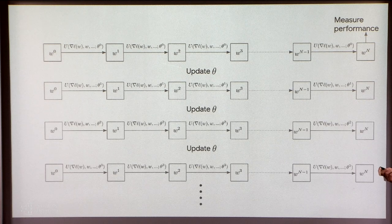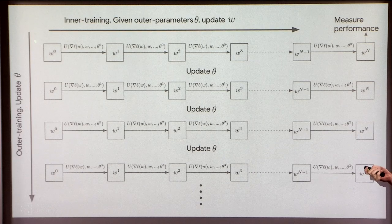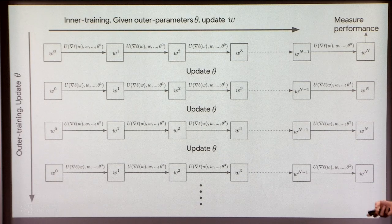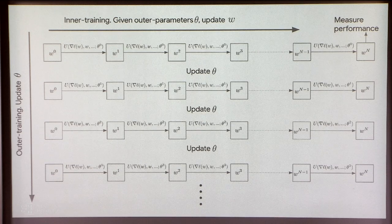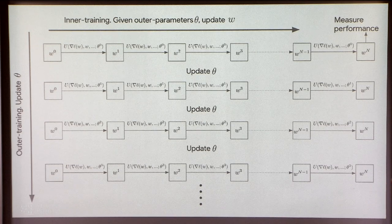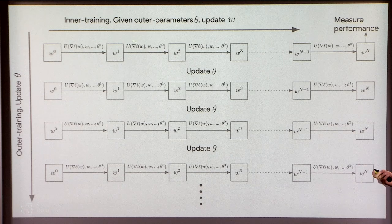You can do this over and over again. We call this outer training loop — the optimization of theta — either outer training or meta-training. We refer to theta as the outer parameters, and we refer to each standard optimization problem as the inner problem — one inner problem provides a single update step for the outer training problem.